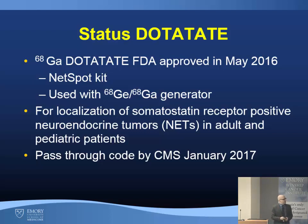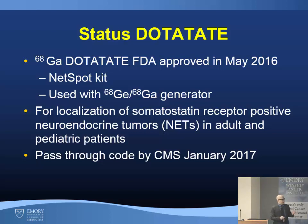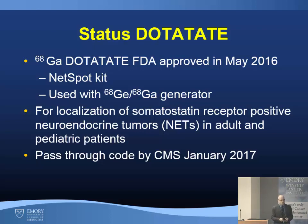Dotatate was approved last year by the FDA via something called the NetSpot kit, used with a gallium generator — a fairly expensive device that needs replacement every ten months or so. You compound the kit and then release it for imaging. The FDA-approved indication is for localization of somatostatin receptor-positive tumors in adults and pediatric patients. Earlier this year, there was a pass-through code from Medicare, meaning the radiotracer itself gets reimbursed.